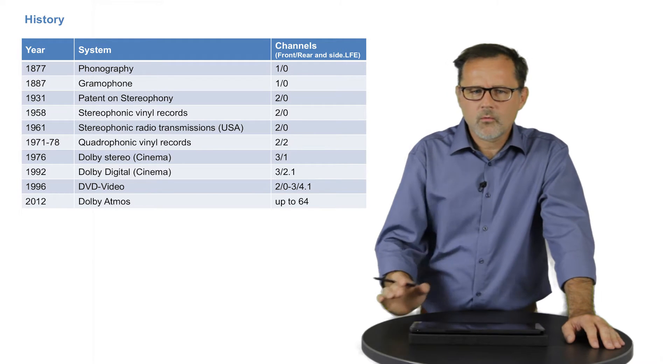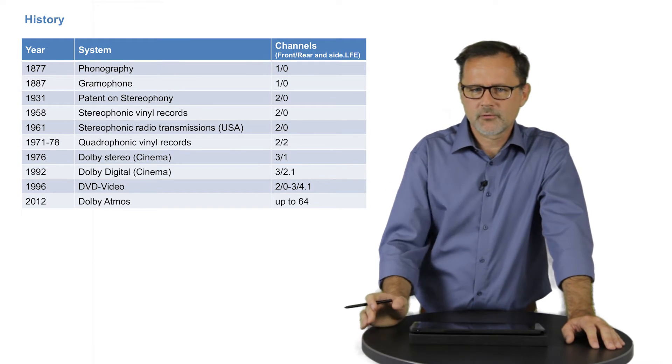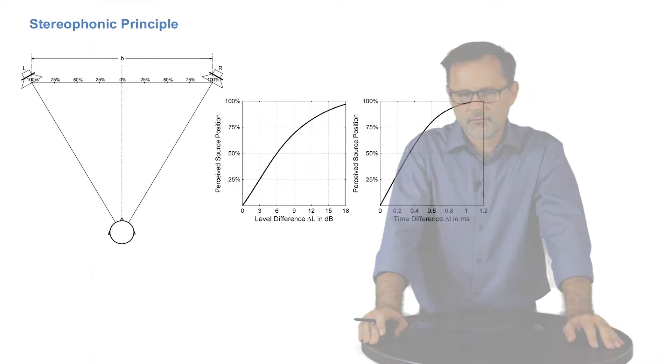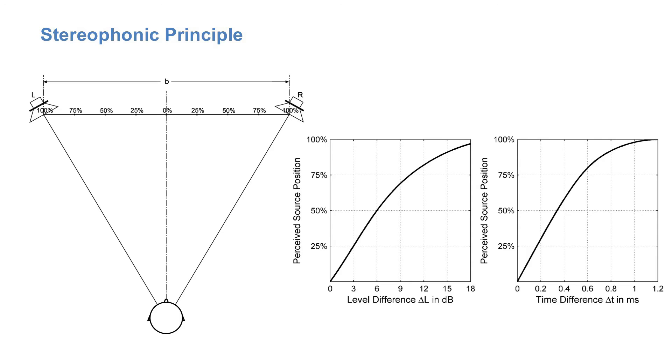If you now want to use a pair of loudspeakers to assign locations to individual sound sources, or to place the image of an extended sound source such as an orchestra on this sonic stage between the two loudspeakers by using appropriate time and level differences, there are two options.